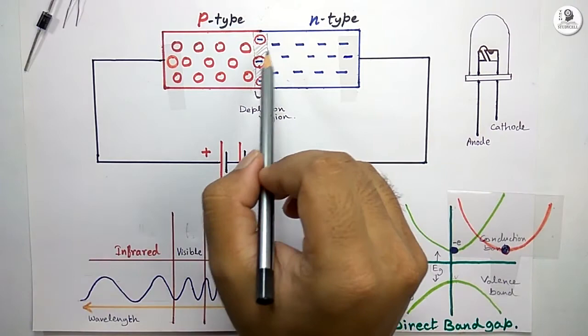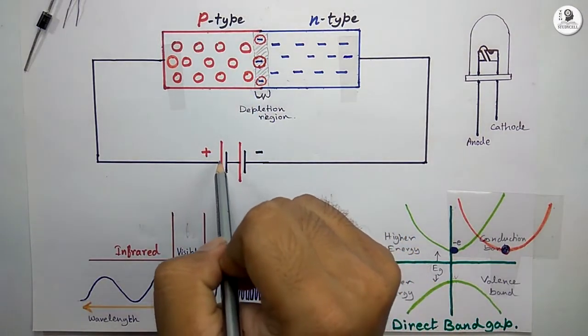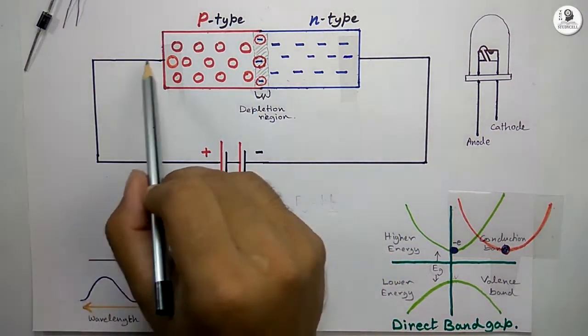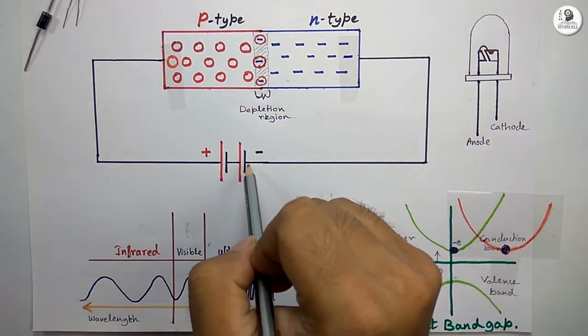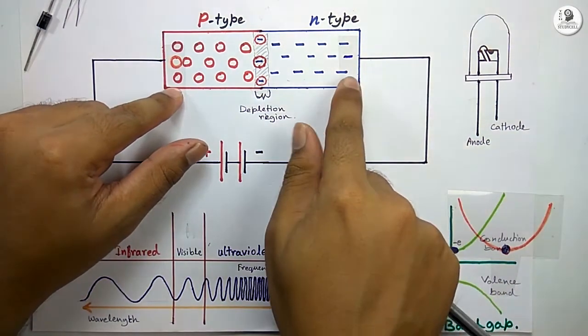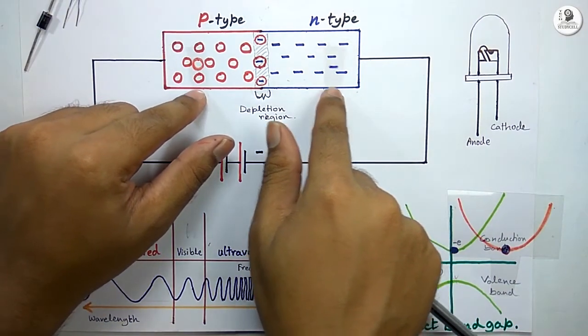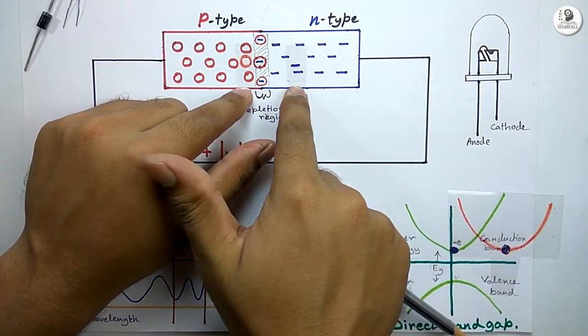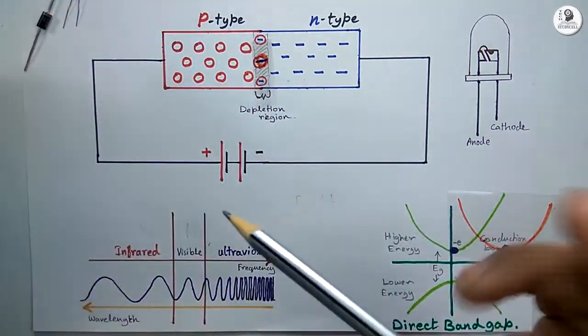When we apply a forward bias to this PN junction, we connect the positive terminal of the battery to the P-type region and the negative terminal to the N-type region. Then holes from the P-type region and electrons from the N-type region flow towards each other and they meet at the depletion region.